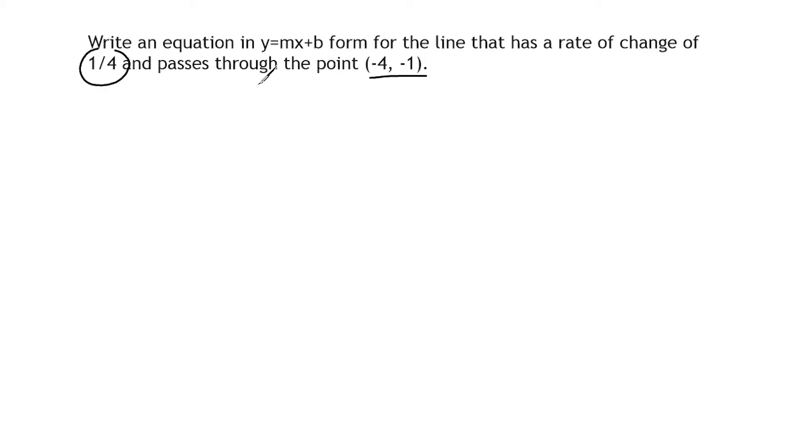So instead of writing our entire equation out, what we're going to do this time is we're just going to substitute every variable that we know the value for. So starting with y, we know that the y in this case is negative 1 equals and m, which is our slope, is one-fourth and our x value is negative 4.